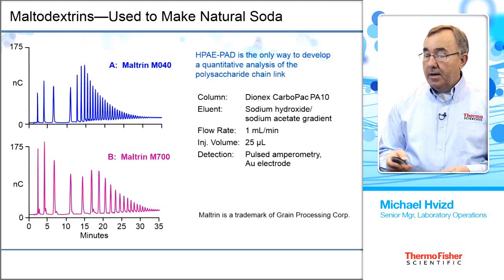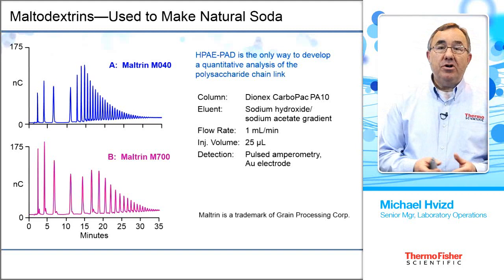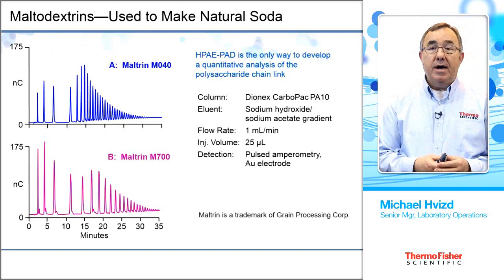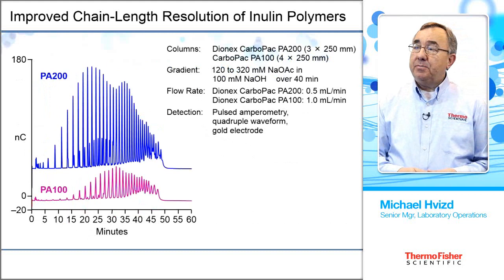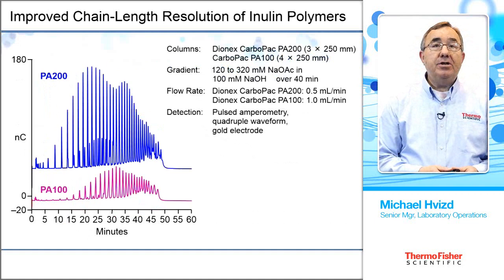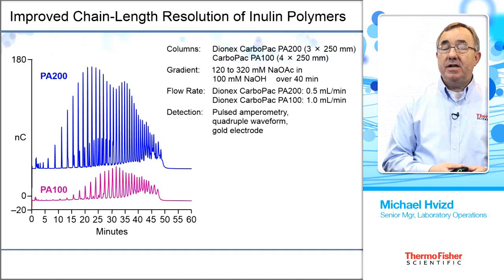Below is another type of maltodextrin. Maltodextrins are used for many things — most of the time as stabilizers or additions to pharmaceuticals as excipients. This next slide shows the difference between the older PA100 column with a larger particle size versus the new PA200 with a much smaller particle size. You can see the improved resolution and sensitivity available using the new Carbopac PA200 column.